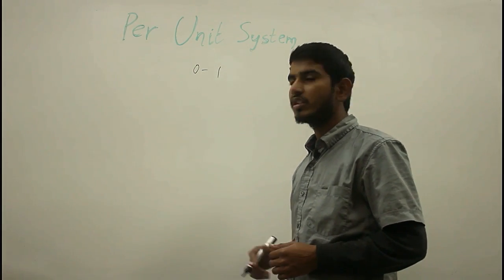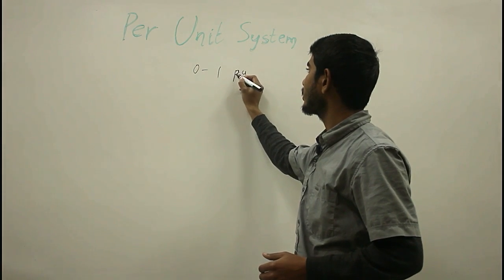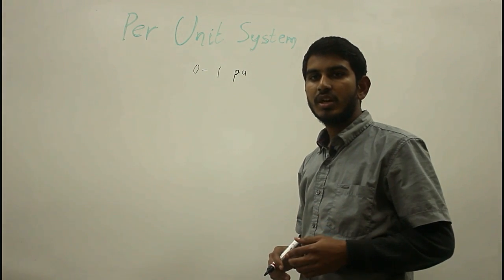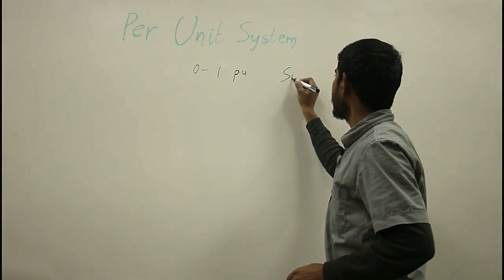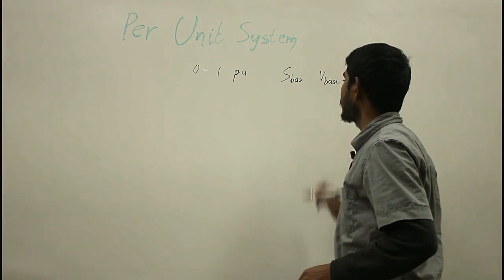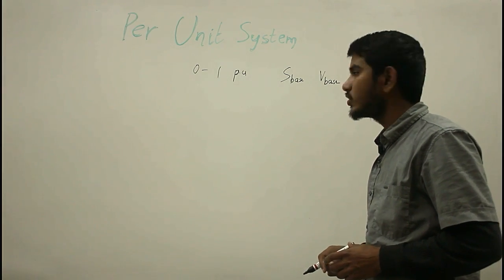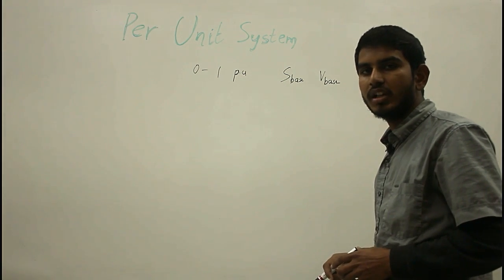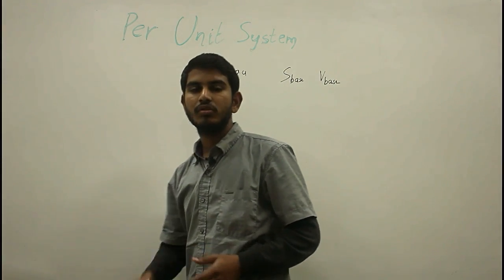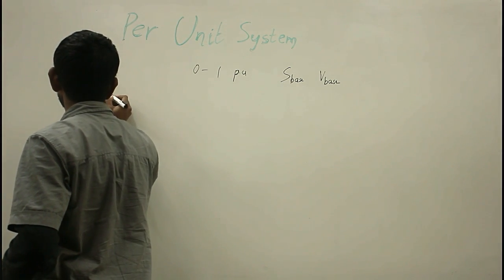Per-unit values are expressed as 'p.u.' — that is, per unit. Whenever you look at any machine, two base quantities are provided on the nameplate: power base and voltage base. By knowing these two base quantities, you can automatically determine the other two base quantities: current base and impedance base. The per-unit value is the ratio of the actual quantity to the base quantity.